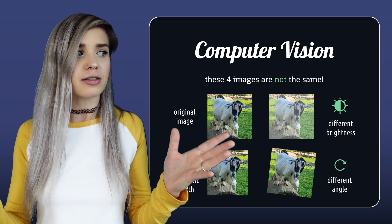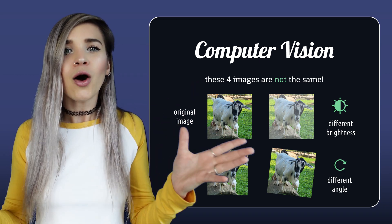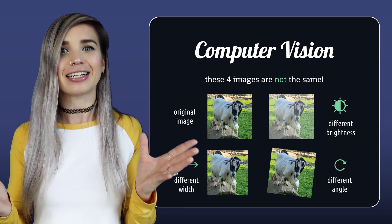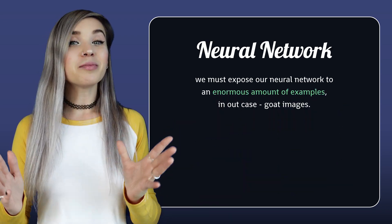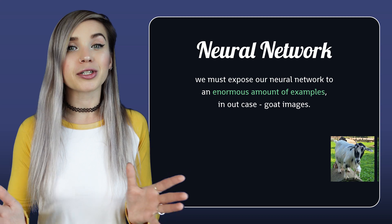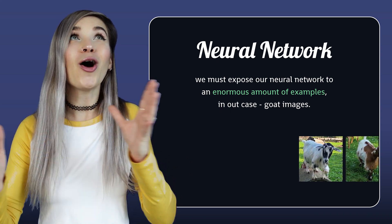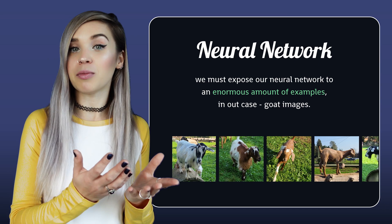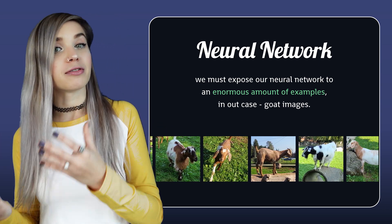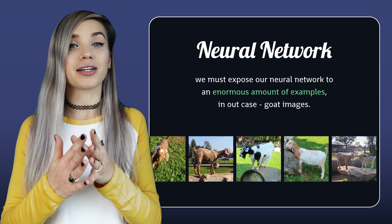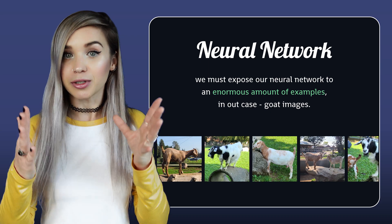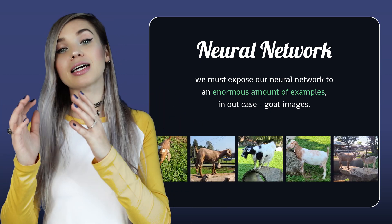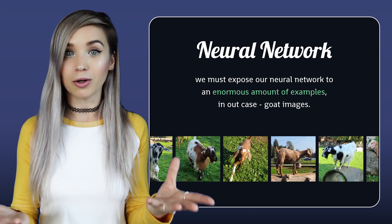So if it is so difficult, how can we ever classify an image, let alone recognize a face in it? We simply expose our neural network to an enormous amount of images. Each image is an example, and the more examples we provide, the bigger the chance that our neural network recognizes the subject — in our case, the class or category of goat.